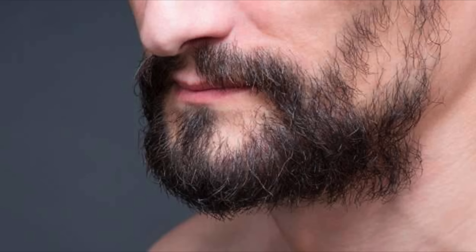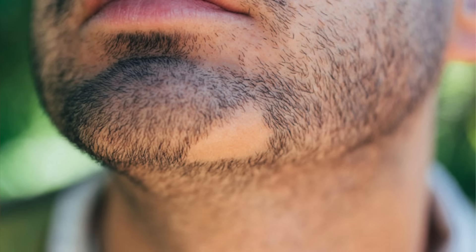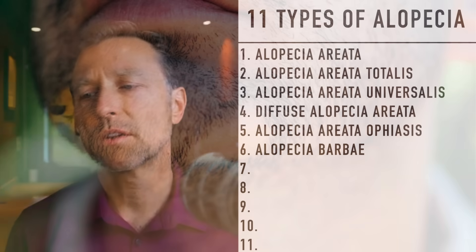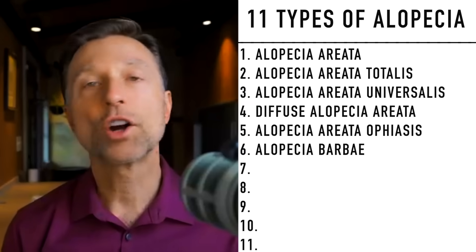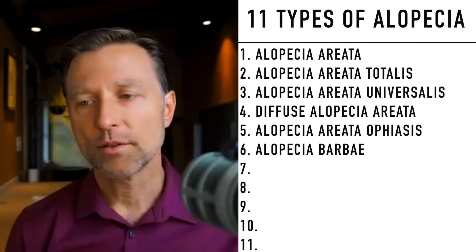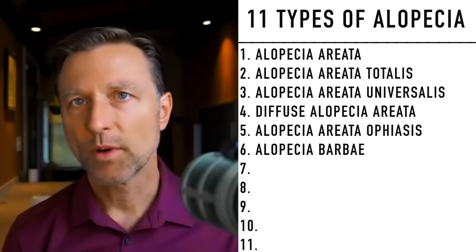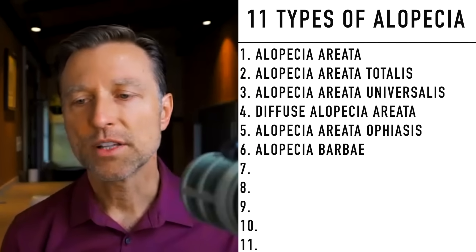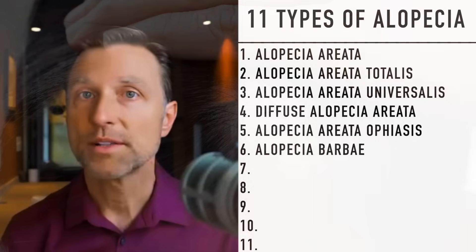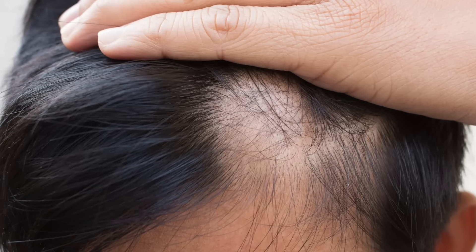The next one is called alopecia barbae. This is a loss of hair either on your mustache or your beard. This version could also occur alongside other types of hair loss, but it is very specific to the beard and mustache area.